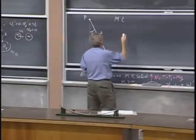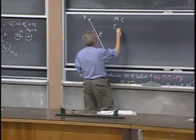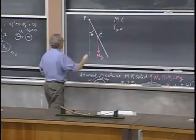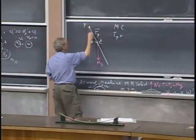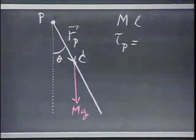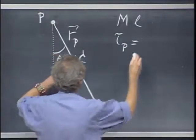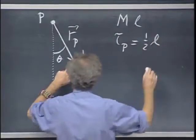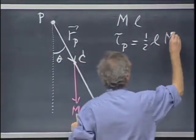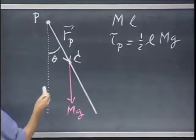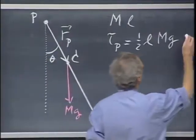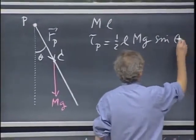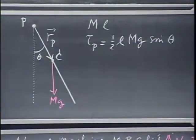So the torque relative to point P — the magnitude — is the position vector R from P to the center of mass crossed with this force, and so that makes it one-half L times mg times the sine of the angle theta. The cross product has the sine of the angle in it.